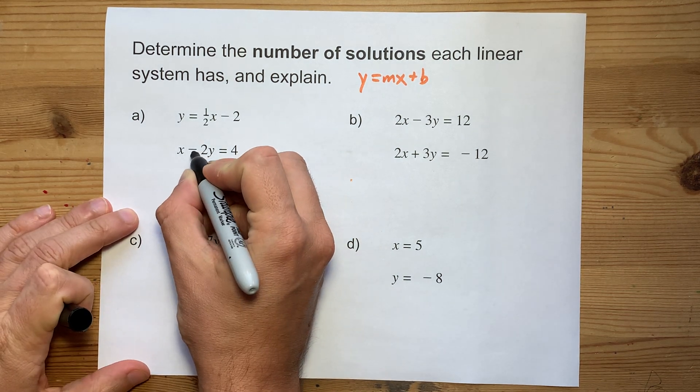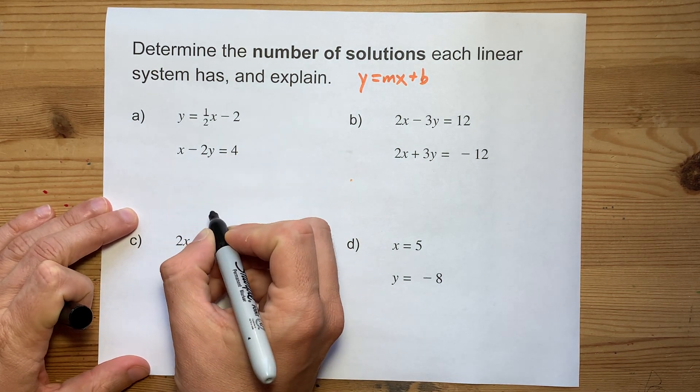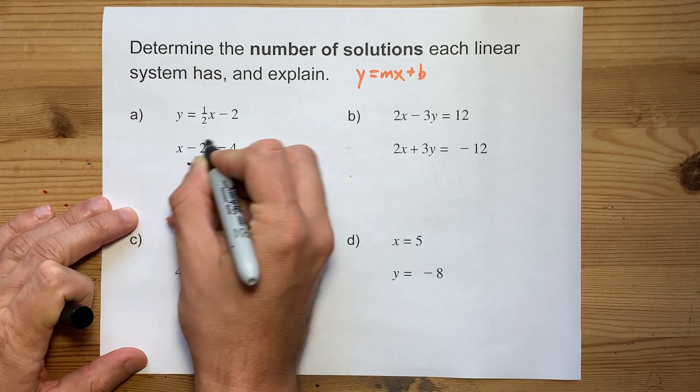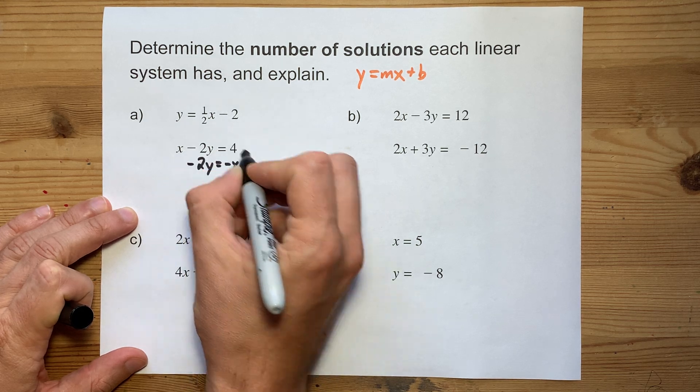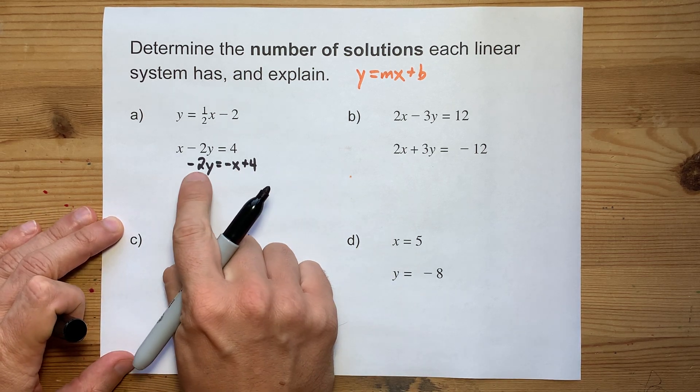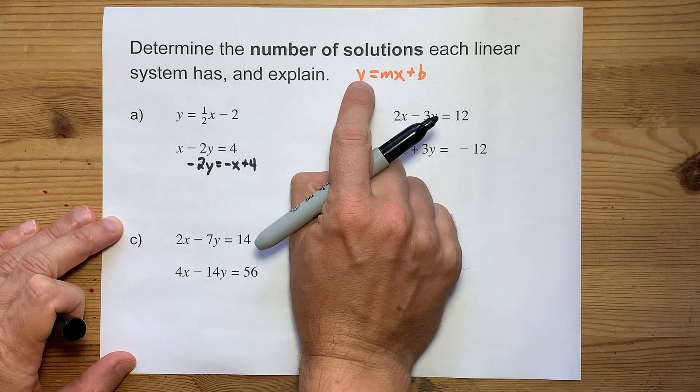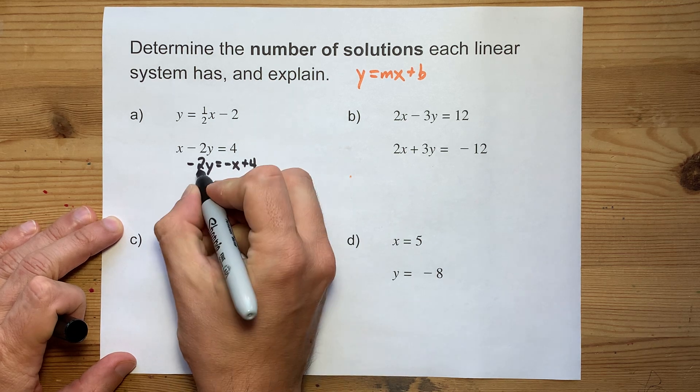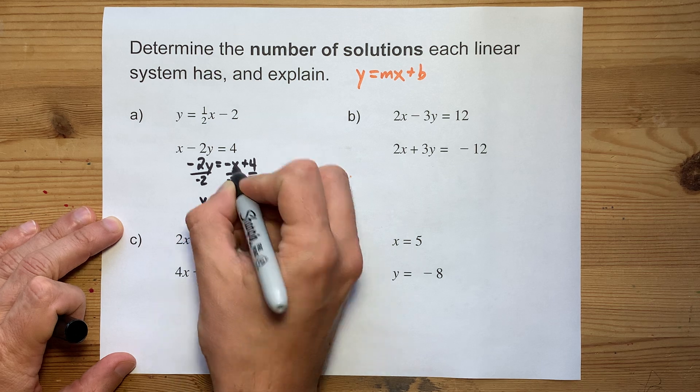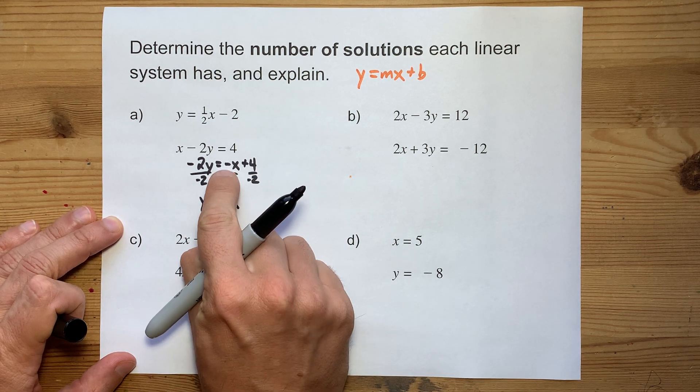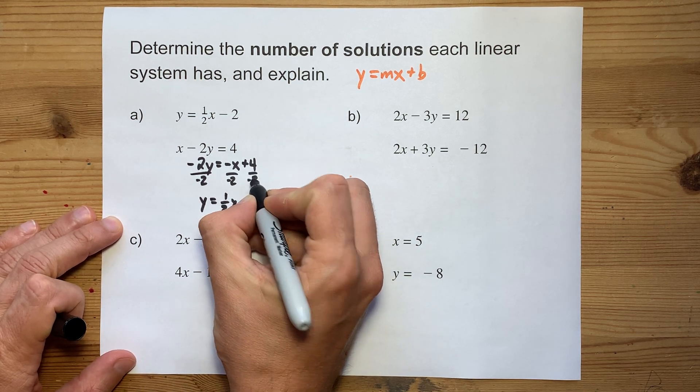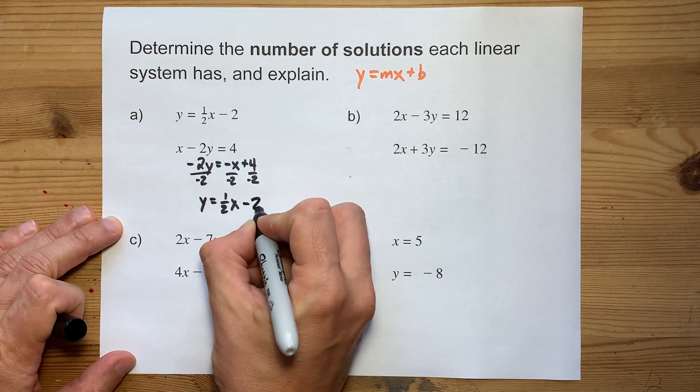I'm going to keep my negative 2y on the right side. I'm going to move my x to the other side. That gives me negative x when I move it over to the right-hand side. There's still a positive 4 sitting there. And then to get rid of the negative 2 in front of y, because we want y isolated, we divide everything by negative 2. y equals, this gives me a half x. That's negative 1 over negative 2 reduces to a half. Positive 4 divided by negative 2 is minus 2.